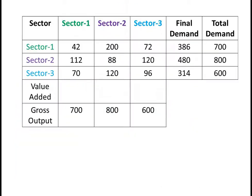In this table, row 1 figures state the amount of output of sector 1 demanded as input in different sectors and demanded for final consumption. Here, 42 is the amount of output of sector 1 used as input in sector 1, 200 is the output of sector 1 used as input in sector 2, 72 is the output of sector 1 used as input in sector 3, and 386 is the amount demanded for final consumption. So the total output of sector 1 is 700.